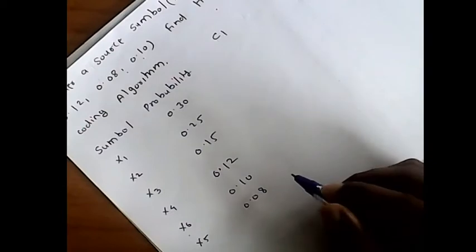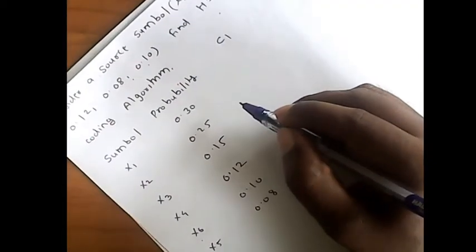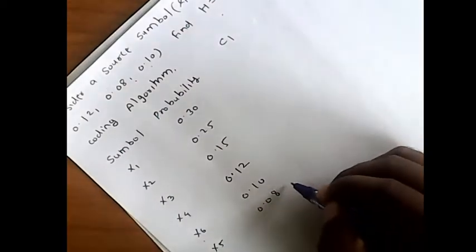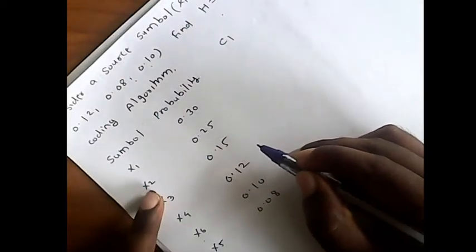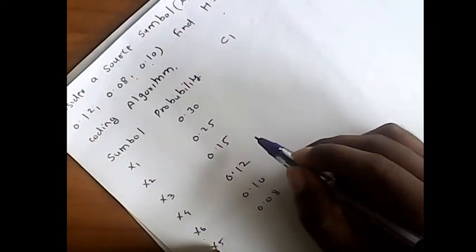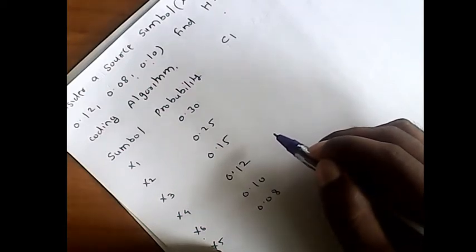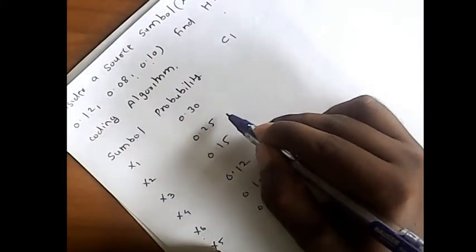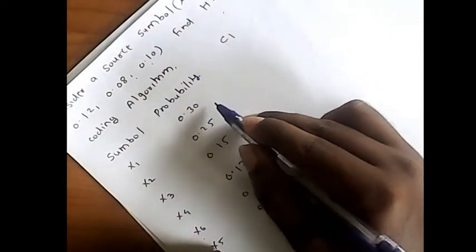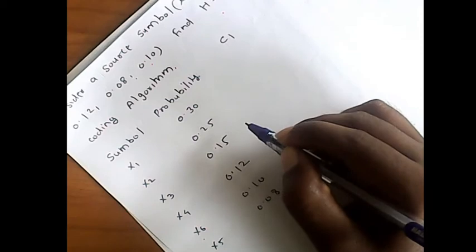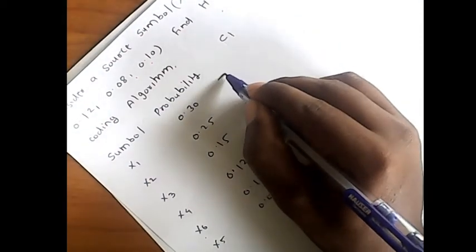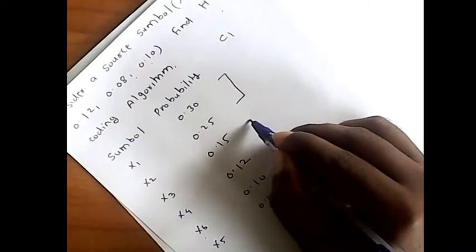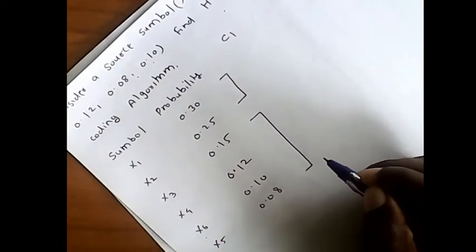In the second step, we divide the given probabilities into two groups that are as equal in probability as possible. Considering from the bottom: x3 to x5 sums to 0.145, and x1 plus x2 sums to 0.155. So we consider the first group as x1 and x2, and the second group as x3 to x5.